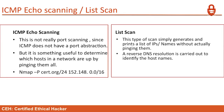ICMP echo scanning, or a list scan. ICMP echo scanning is not really port scanning since ICMP does not have a port abstraction, but it is sometimes useful to determine which hosts on a network are up by pinging them all. A list scan simply generates and prints a list of IPs and names without actually pinging them. A reverse DNS resolution is carried out to identify the host names.